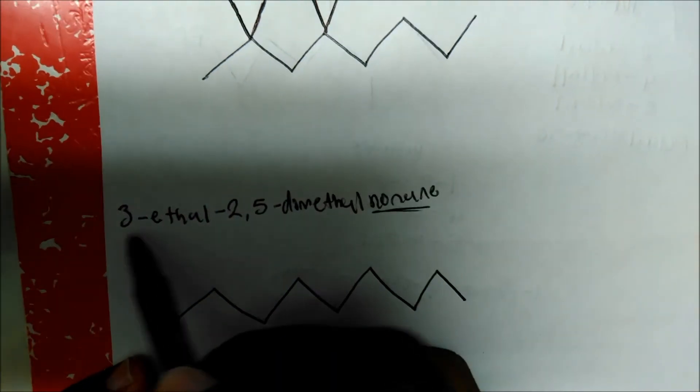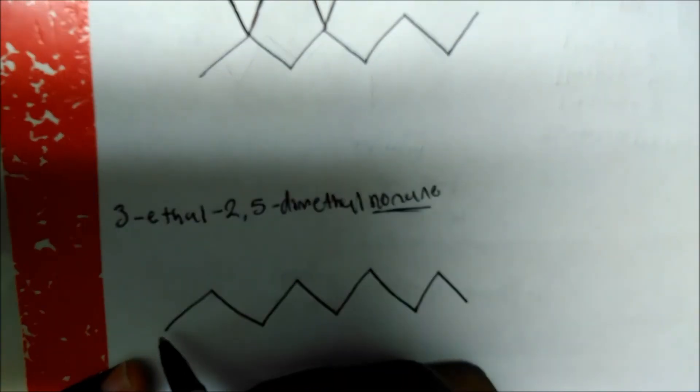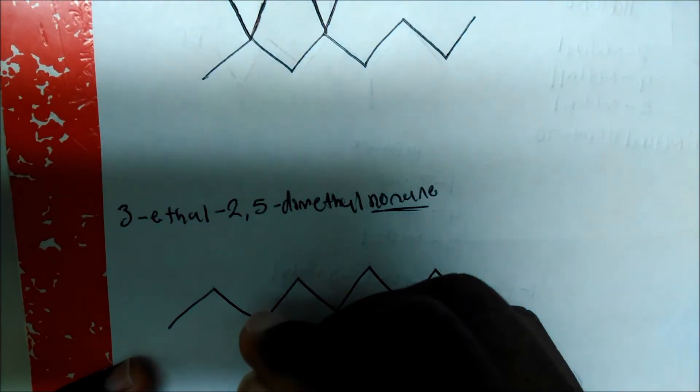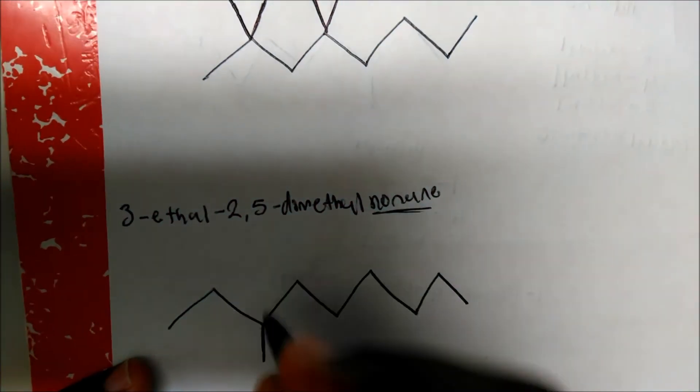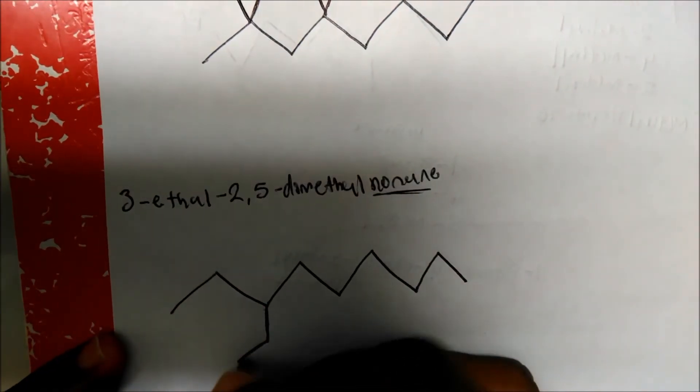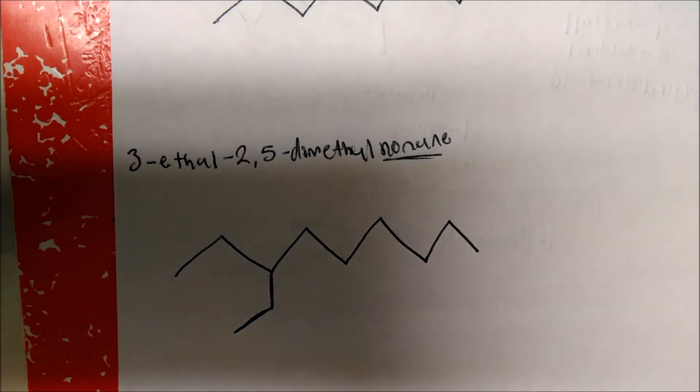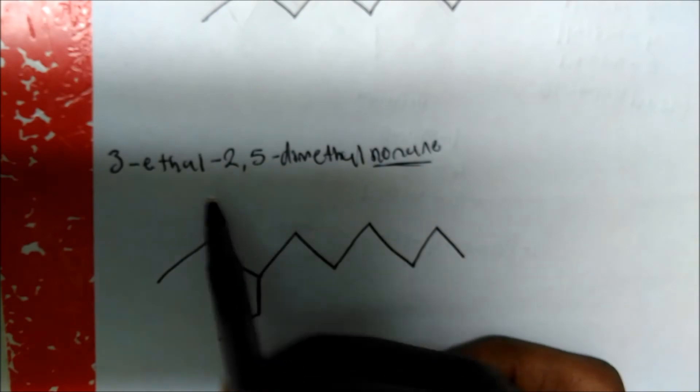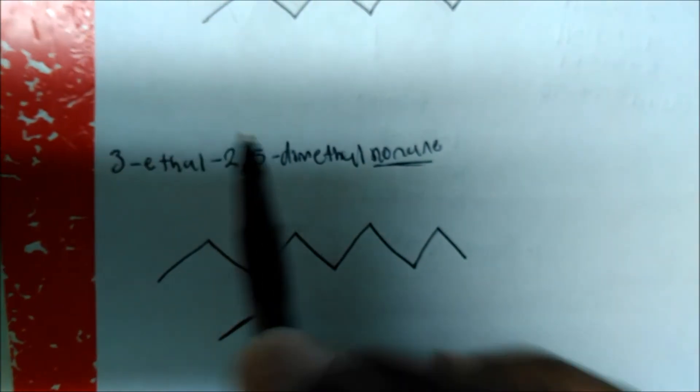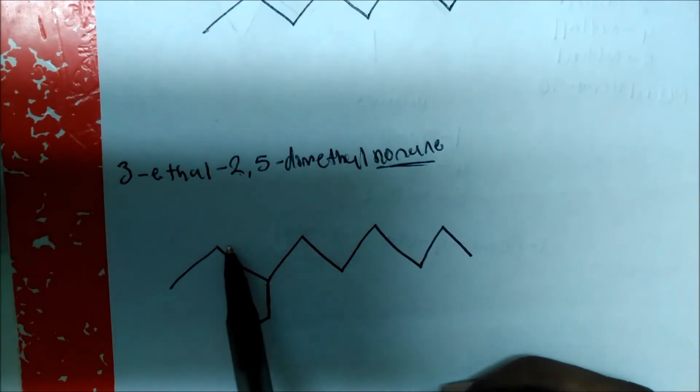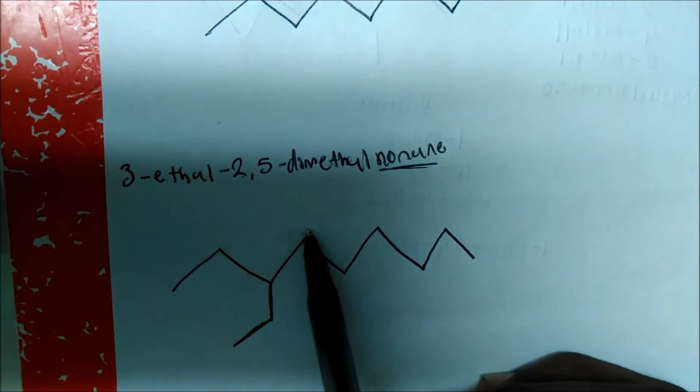What this is telling me is that on carbon 3, I have an ethyl group. So carbon 1, 2, 3, I have an ethyl group. So this is a methyl. One more branch will give me an ethyl. On carbon 2, we have a methyl and also on carbon 5.